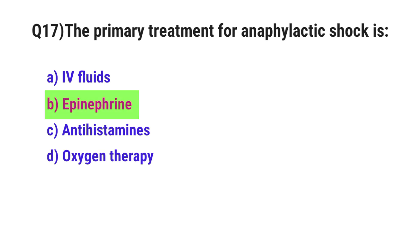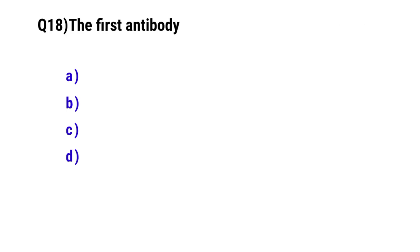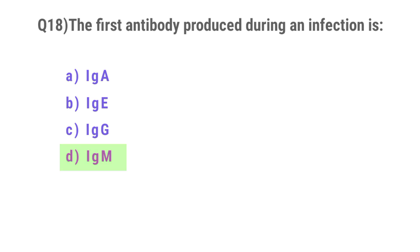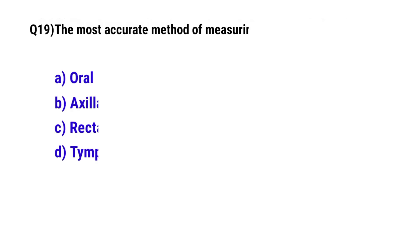Question No. 18. The first antibody produced during an infection is? The correct option is: IgM.